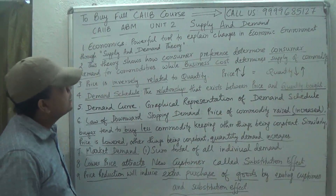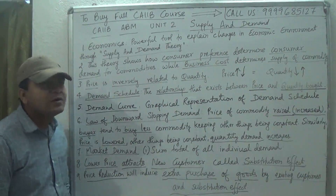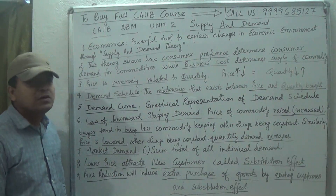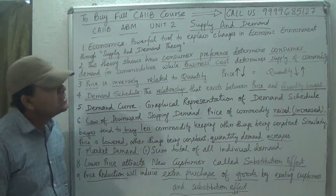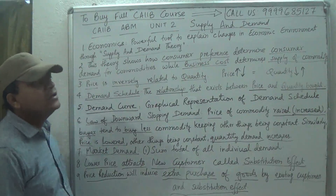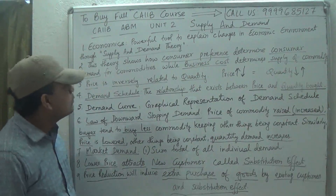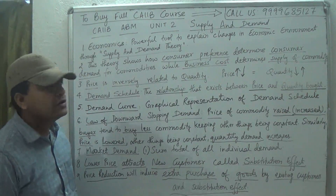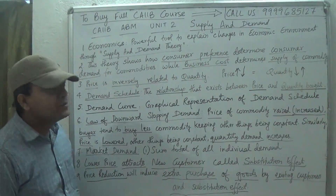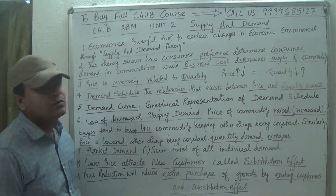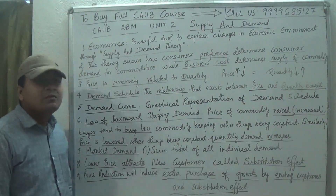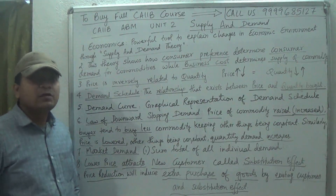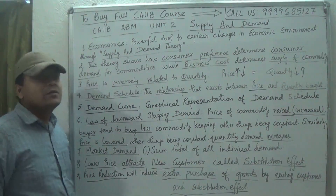Supply and demand theory also shows the preferences of the consumer. Consumer preference determines what is the consumer need or what is the consumer demand for any particular commodity, while business cost determines what should be the supply of that particular commodity.